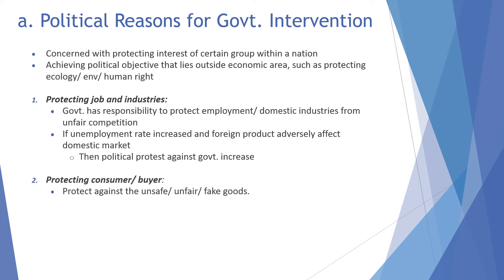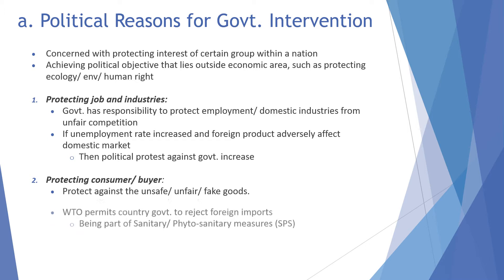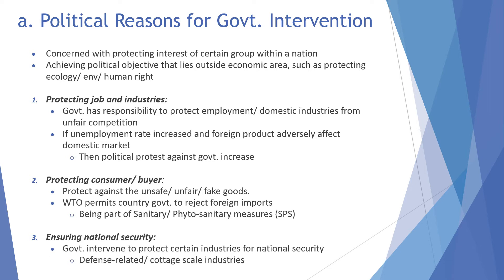Next is protecting the consumer and buyer — protecting against unsafe, unfair, and fake goods. The WTO permits country governments to reject foreign product imports as part of sanitary and phytosanitary measures (SPS). Next is ensuring national security, where the government intervenes to protect certain industries for national security, defense-related purposes, or cottage-scale industries.